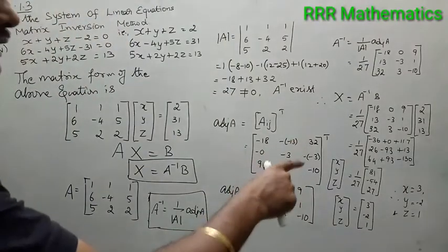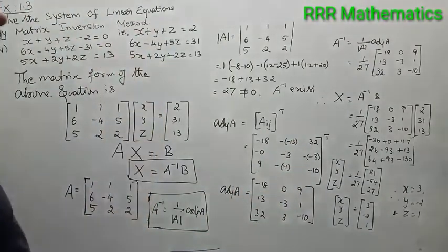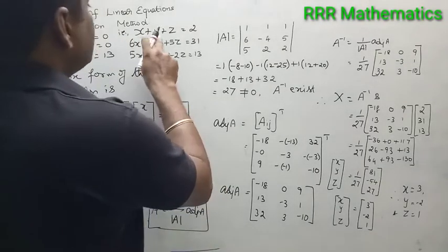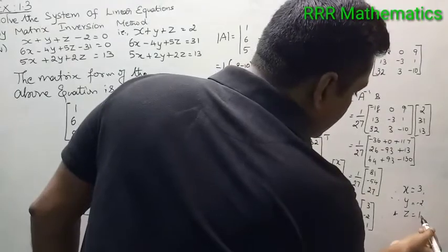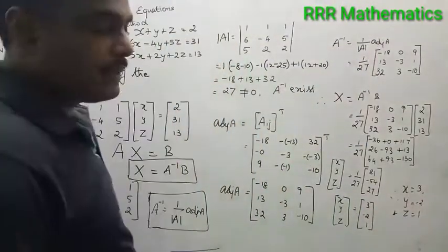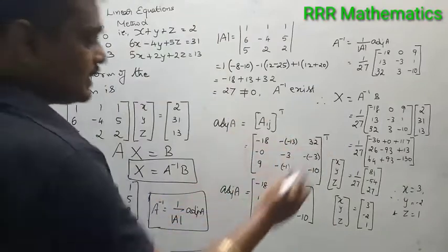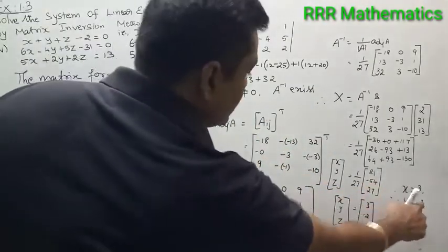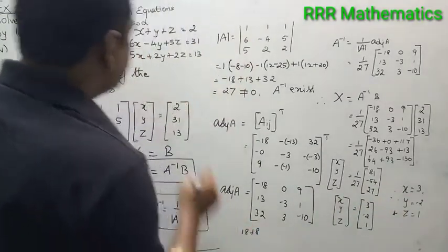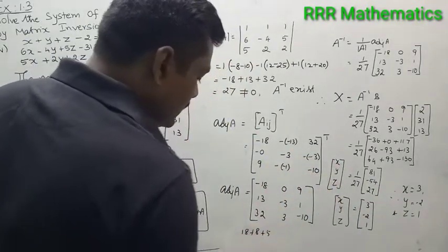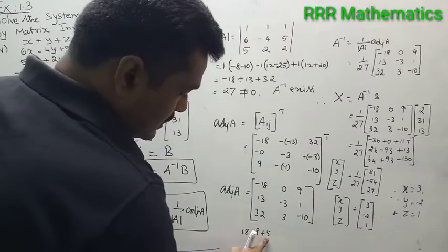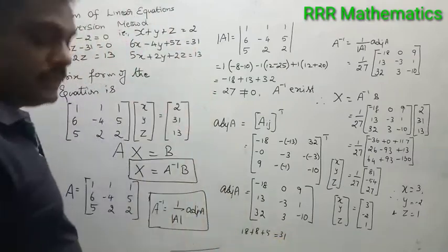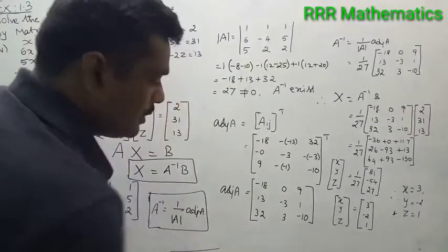How to verify? Substitute x, y, z in any equation and check the right hand side. First equation: x plus y plus z equals 3 plus (minus 2) plus 1 = 2. Correct. Second equation: 6 times 3 = 18, minus 4 times minus 2 = plus 8, 5 times 1 = 5. That gives 18 plus 8 plus 5 = 31. Satisfied.